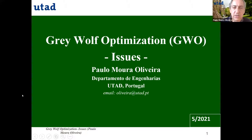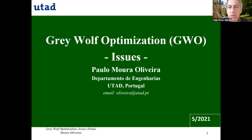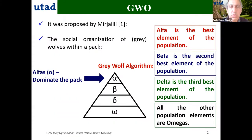In this presentation I'm going to speak about the Gray Wolf Optimization, the GWO. I'm going to present first a brief overview of the algorithm and then speak about some specific issues. This algorithm was proposed by Mir Jalili and is inspired by the behavior of a pack of wolves.